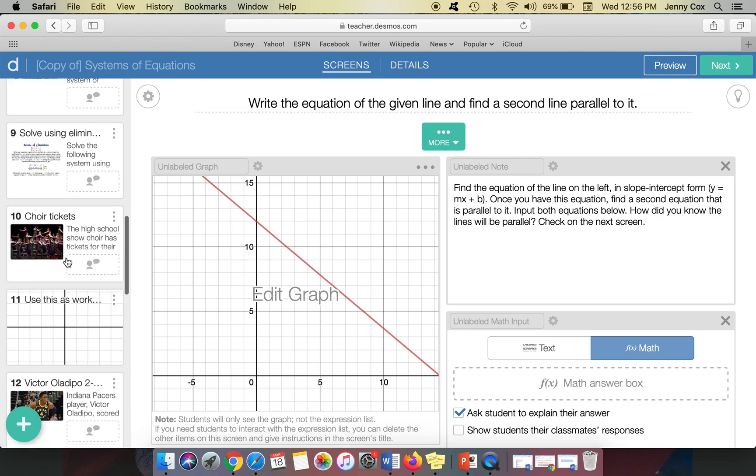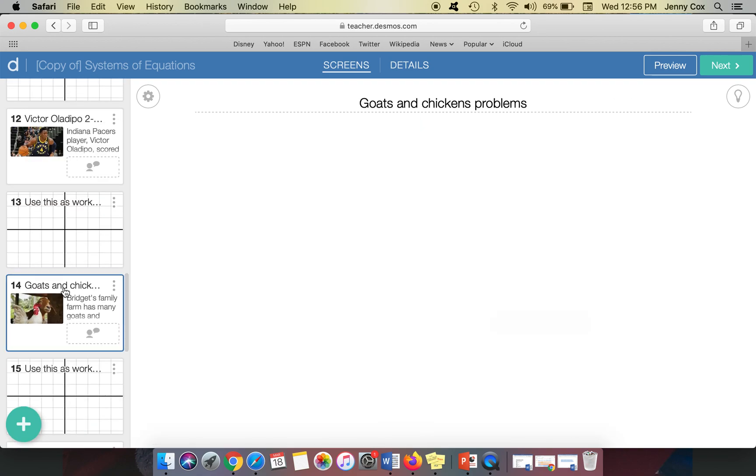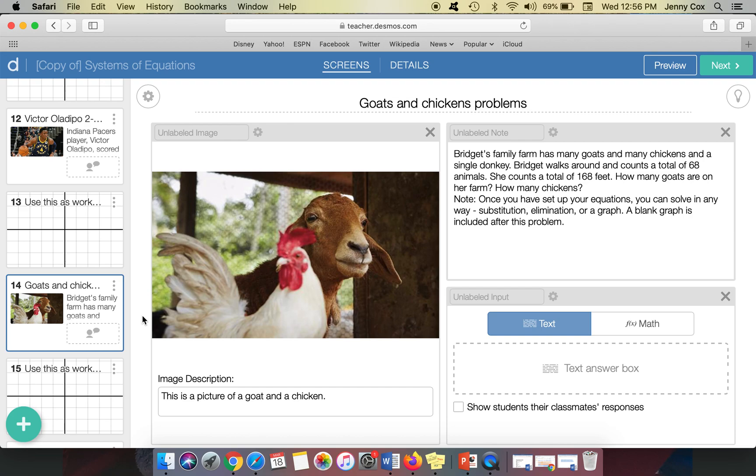So maybe you have someone that's not into goats and chickens, but they're into horses and cows. Maybe you do a problem about horses and cows. So you can always adjust what's already there. As I've said in the last video, don't try to recreate the wheel. You can always use other teacher resources and build from there.